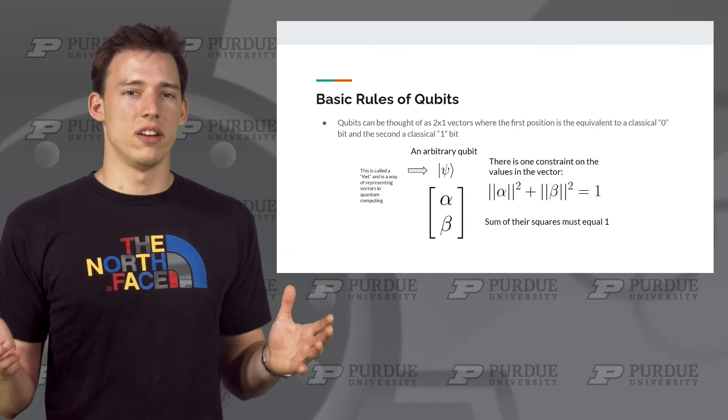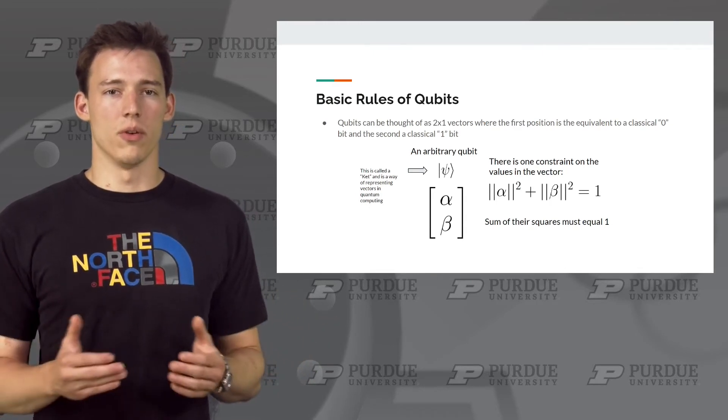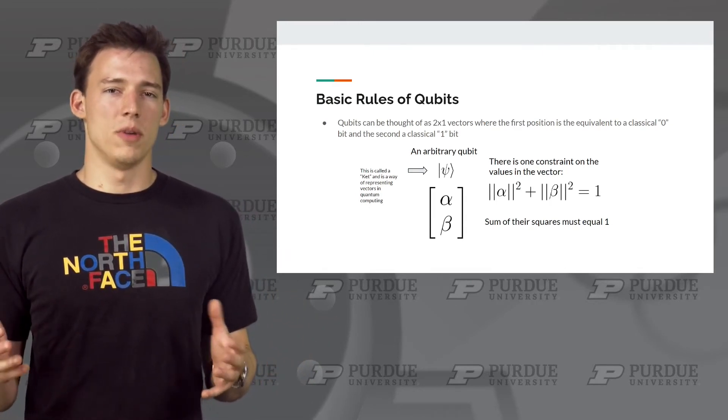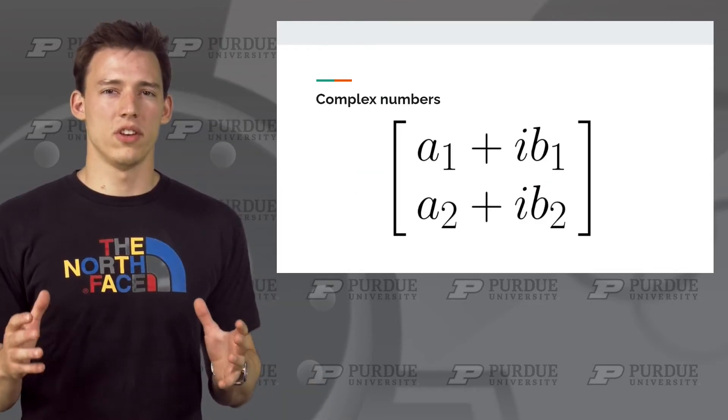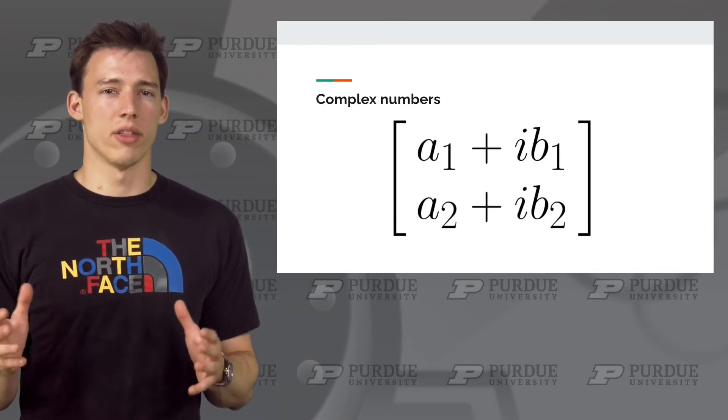The interesting thing about this constraint is that it does not limit us just to numbers between 0 and 1. Instead, our amplitudes can be negative or even complex numbers. Complex numbers are what allow us to see a state vector as a point in a three-dimensional sphere.